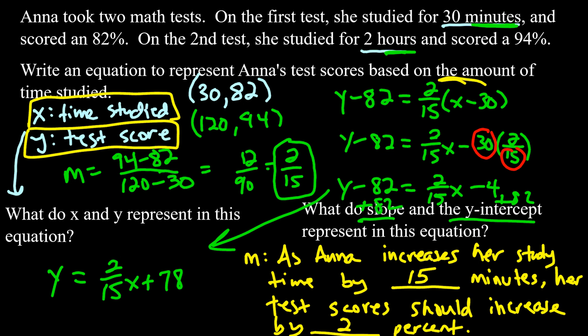The y-intercept represents what happens if Anna didn't study at all — x equals zero. She should expect a 78% on the test. The y-intercept represents the expected score if she spends no time studying: 78%.